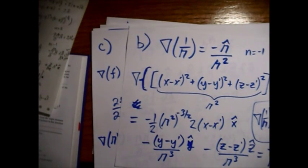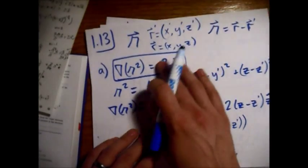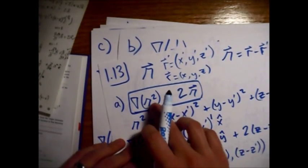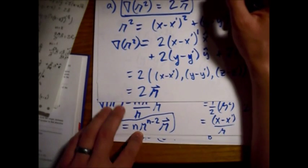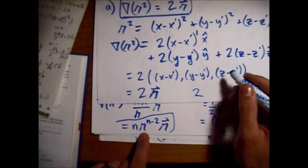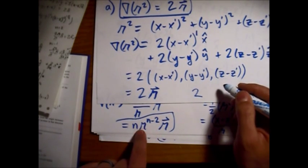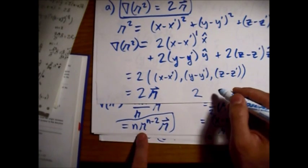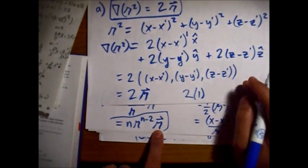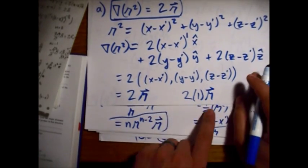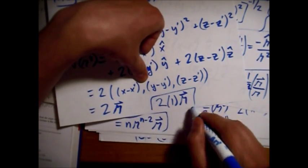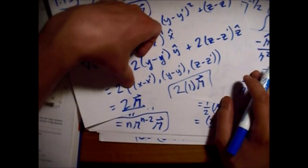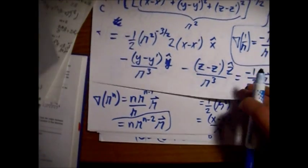Now checking part a, where n equals 2. The magnitude to the n minus 2 is r to the zero, which is just 1. So we get 2 times the separation vector, which equals the answer from page one. Both cases check out, so we can trust this general formula.